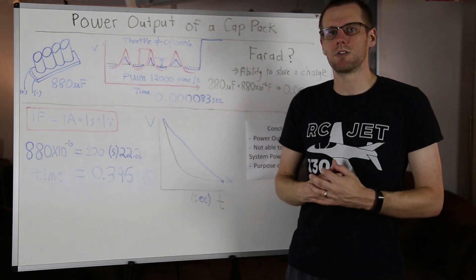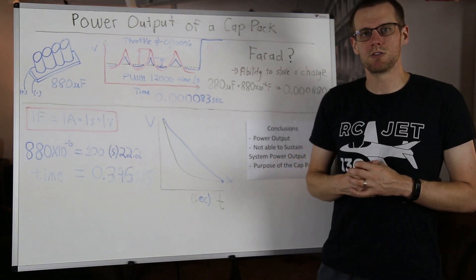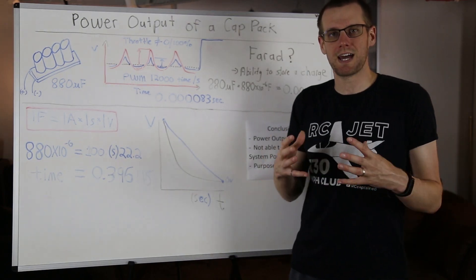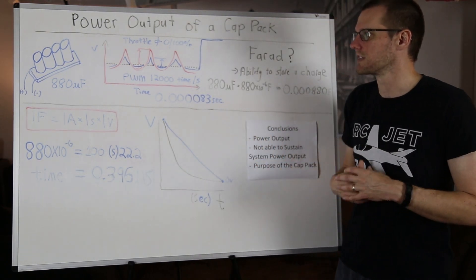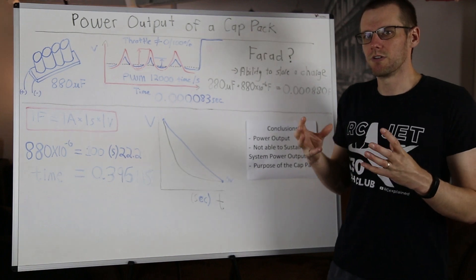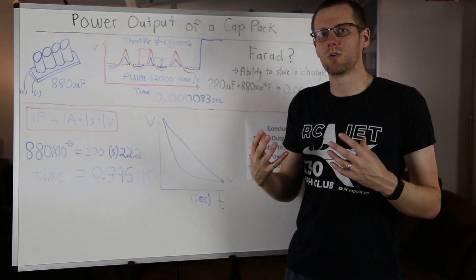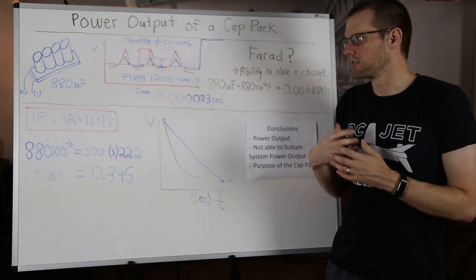and that's so that we can increase the reliability of the electronic speed control and prevent catastrophic failures of these electronic speed controls. Let's quickly review exactly why we would want to have a capacitor bank within our system.